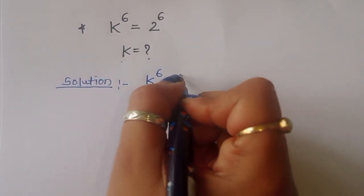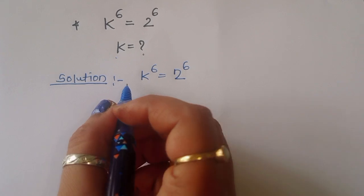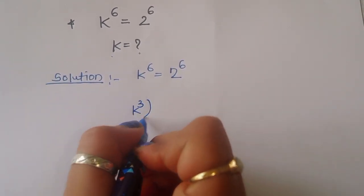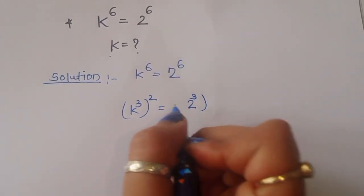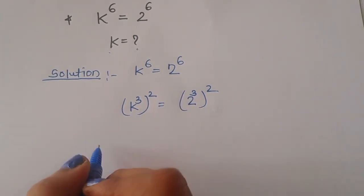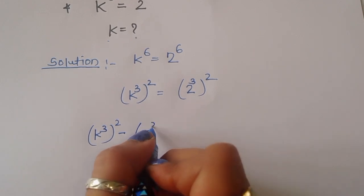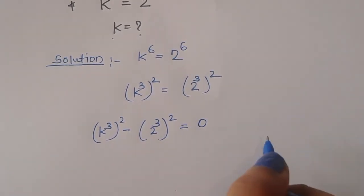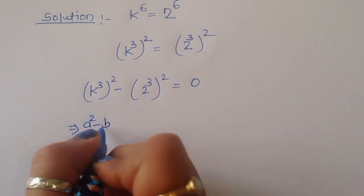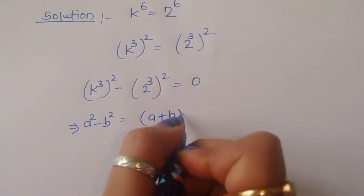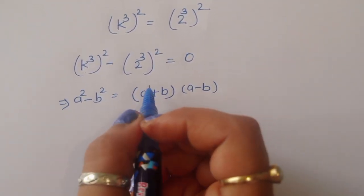k power 6 is equal to 2 power 6 is given. We can write this in cube form: k power 3 squared equals 2 power 3 squared. So k power 3 squared minus 2 power 3 squared is equal to 0. This is of the form a squared minus b squared, and we know the formula a squared minus b squared equals a plus b times a minus b.